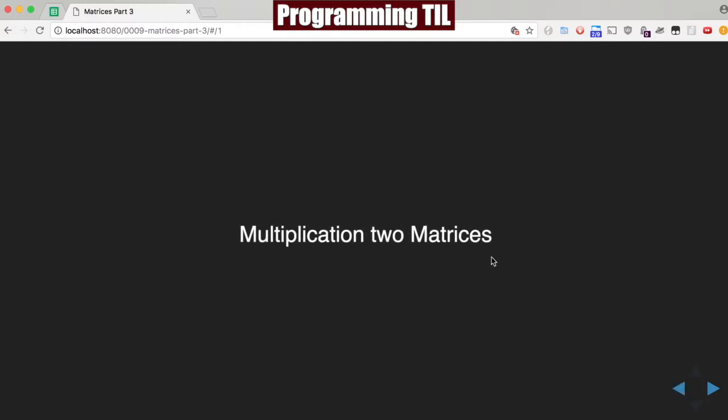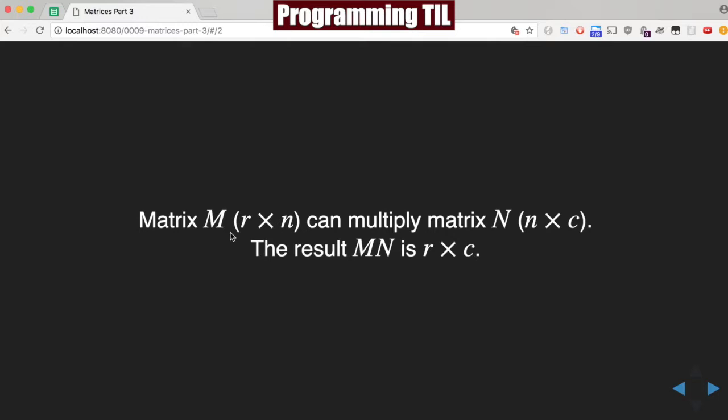So we can multiply two matrices pretty easily. You have a matrix of M, which is row times column, where N is the column. It can be multiplied against another matrix N, where N times C, and N is the rows. So the column of the first one must match the rows of the second in terms of quantity. The result is R by C, so the rows of the first times the column of the second.